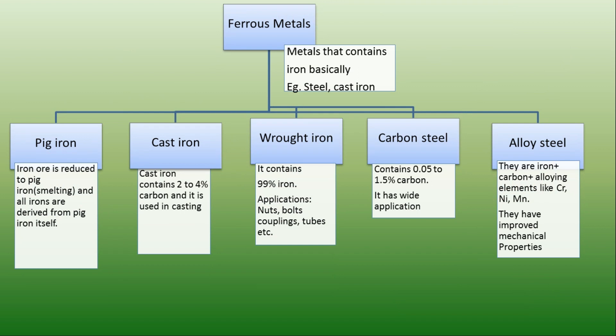Ferrous metals — metals that contain iron basically. The first one is pig iron. When iron ore is reduced in a blast furnace, the very first product we get is pig iron. All other irons are derived from pig iron itself.